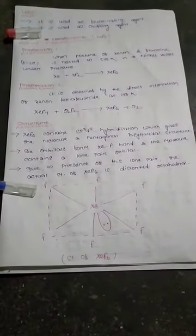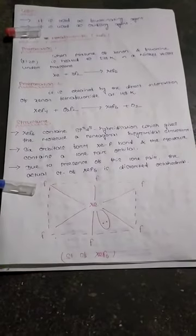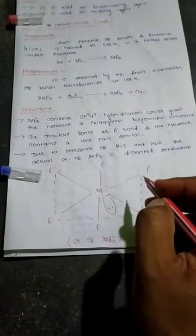In the last class we discussed the structure. XeF6 basically contains sp3d3 hybridization which gives the molecule a pentagonal bipyramidal structure. So it basically contains pentagonal bipyramidal structure.